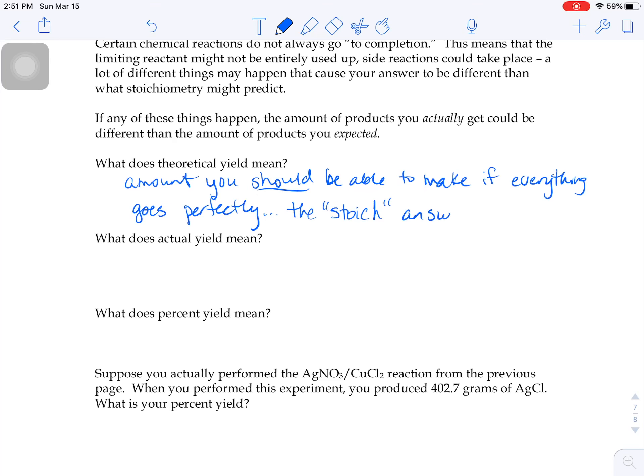The stoic answer assumes that the chemicals behave exactly the way they should. The actual yield is the amount you get when you actually perform the experiment.